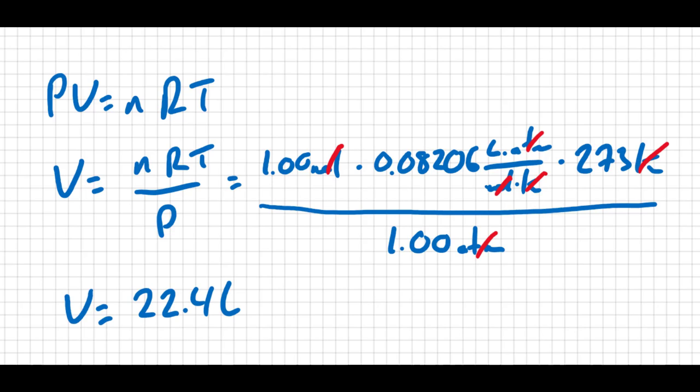And that's going to be true about one mole of any gas. According to the ideal gas law, if you have a mole of gas at STP, it will have the volume of 22.4 liters. It doesn't matter what the gas is.